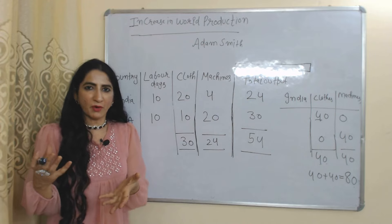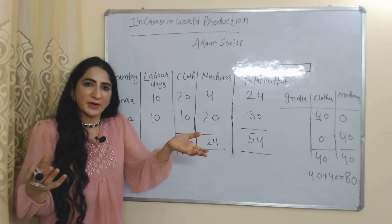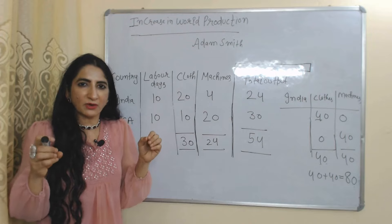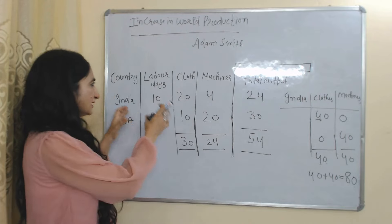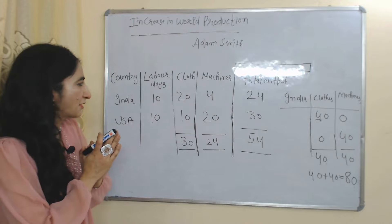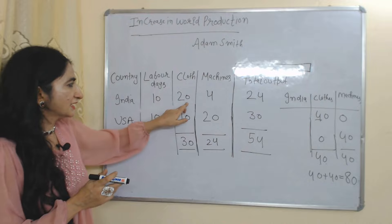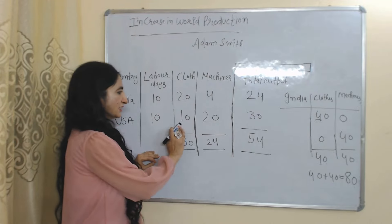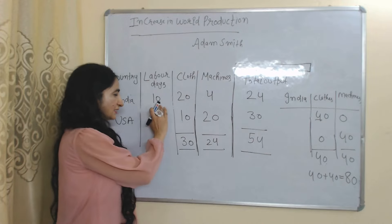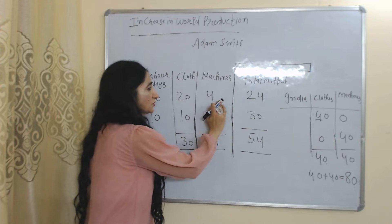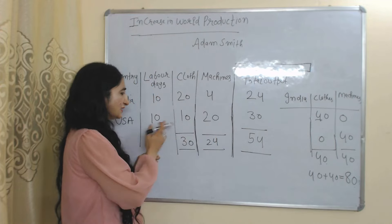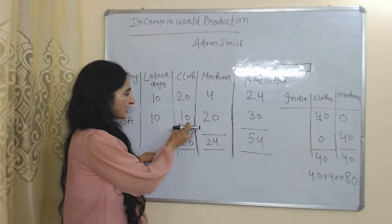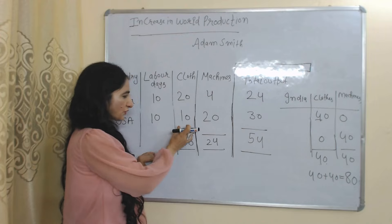Now we will see Adam Smith's views about gain from trade. According to Adam Smith, after international trade, production of both countries will increase and eventually world production will increase. An increase in world production will be called gain through international trade. For example, with 10 days of labor, India can produce 20 units of cloth, and USA can produce 10 units of cloth. With 10 days of labor, India can produce 4 units of machine and USA can produce 20 machines.